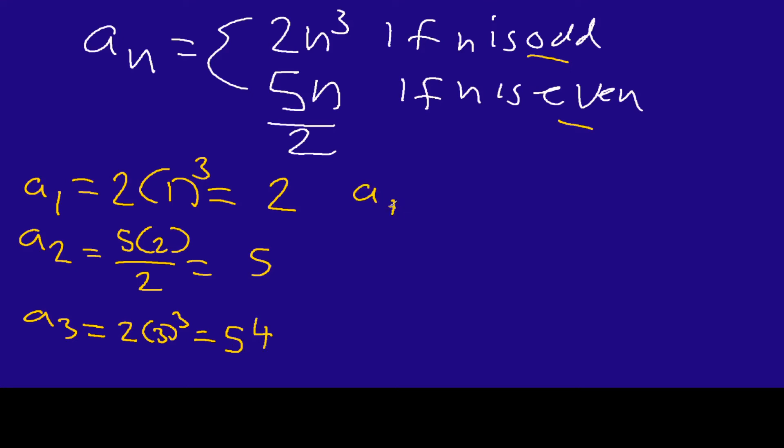And then a_4 here - this time we're using even. So we're going to have five times four over two. Five times four is 20 and 20 divided by two is going to be 10.